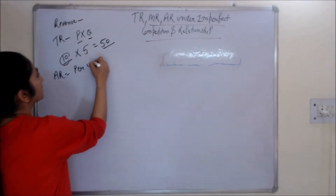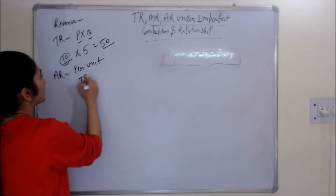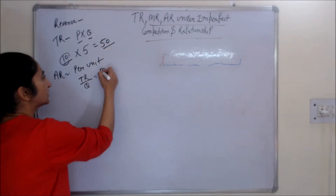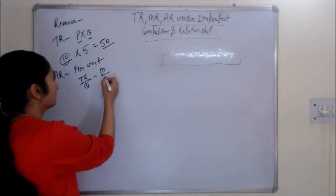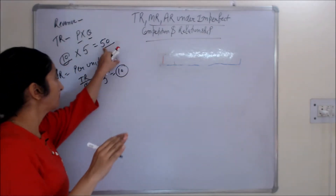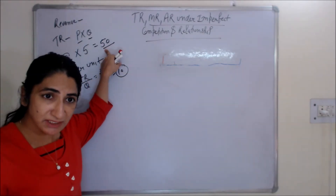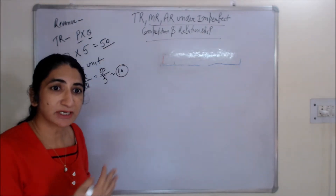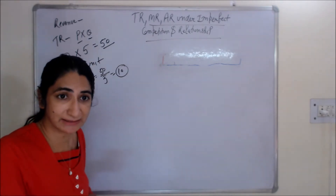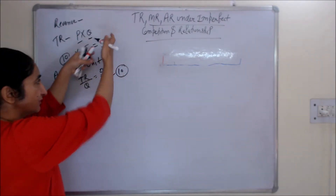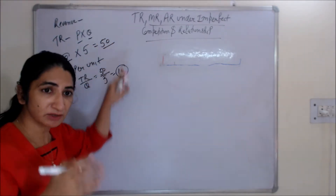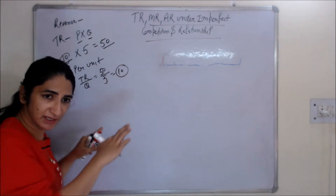Now let's talk about average revenue. Average revenue is revenue per unit. If you divide TR by quantity Q, and your total revenue is 50 with quantity 10, then your average revenue is 5. So average revenue equals TR divided by Q, which equals the price per unit.